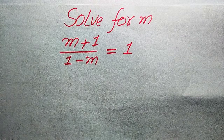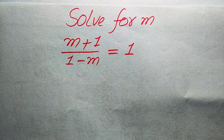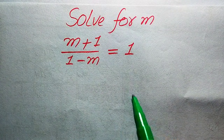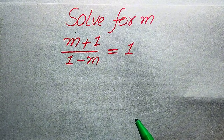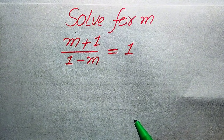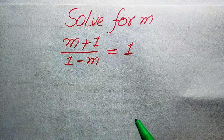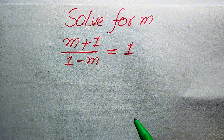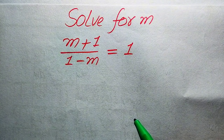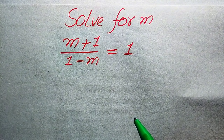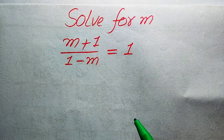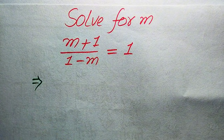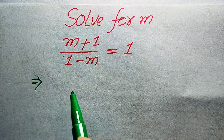Hello everyone. How to solve this problem: for the values of m, if we have (m+1) divided by (1-m) equals 1, and we solve this for all values of m. In this method, we will first find all the roots of this equation, and at the last we will verify which of the roots are solutions and which are extraneous roots.